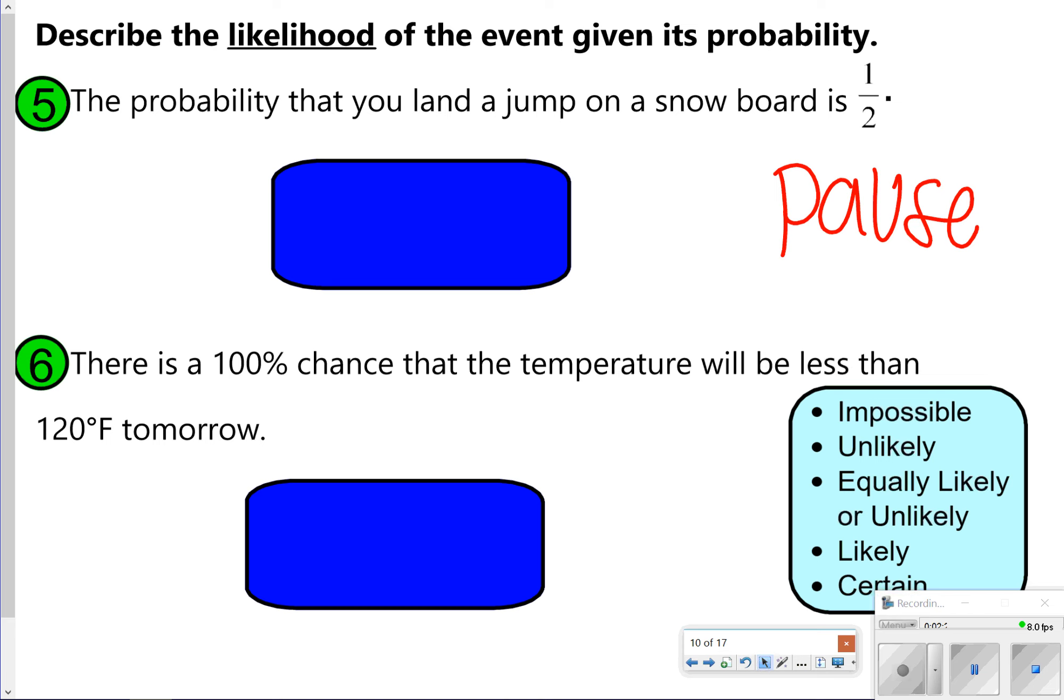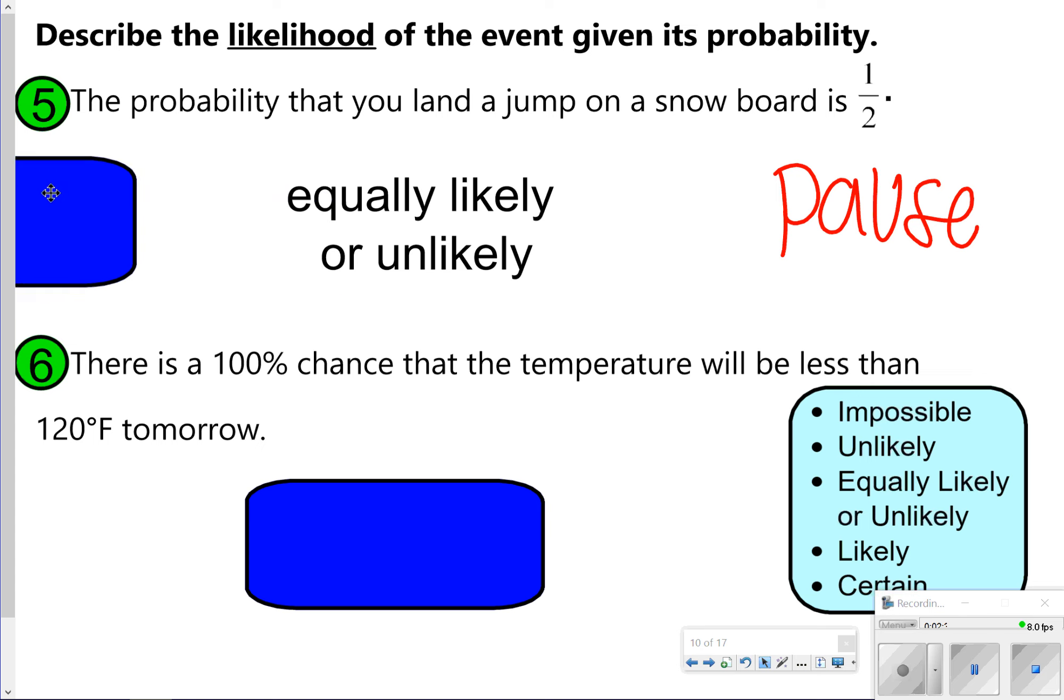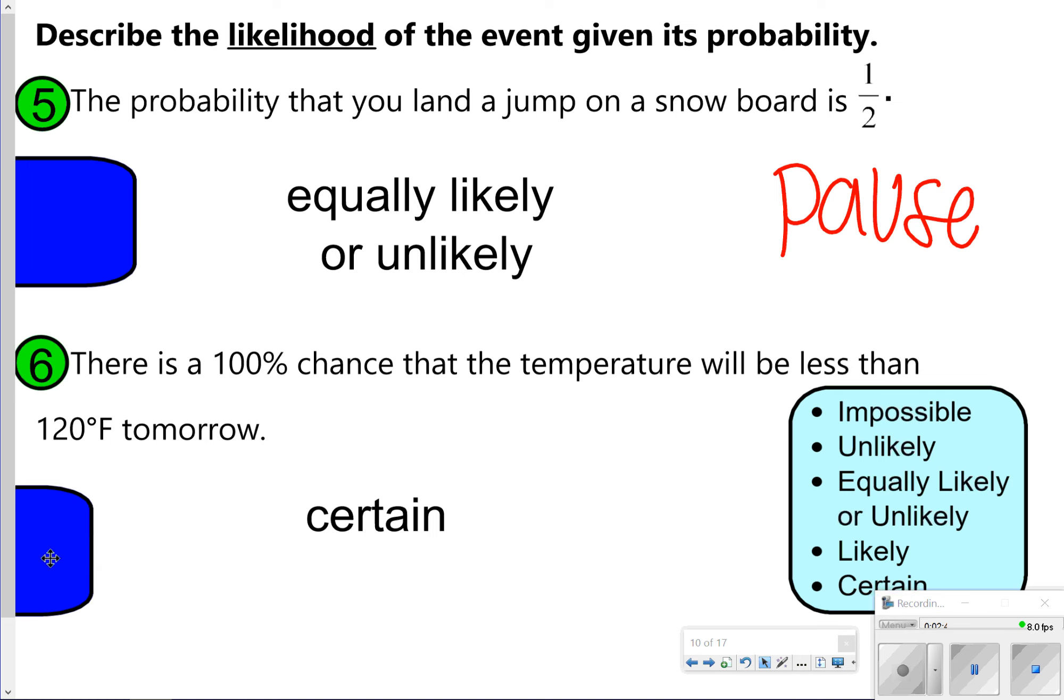So for number five, the probability that you would land a jump on a snowboard is one half. That's going to be equally likely or unlikely. That's 50% right down the middle. And number six says there's a 100% chance that the temperature will be less than 120 degrees Fahrenheit tomorrow. That one is definitely certain. We don't live in a desert here, so we are going to give that a certain because it is 100%.